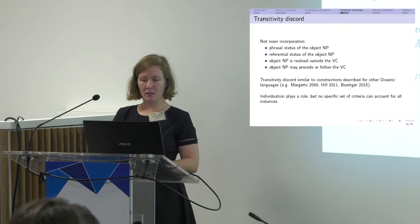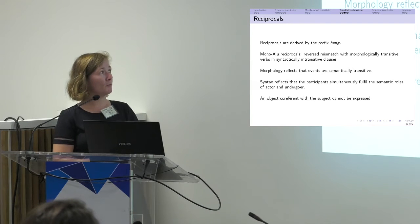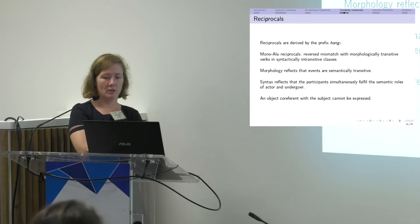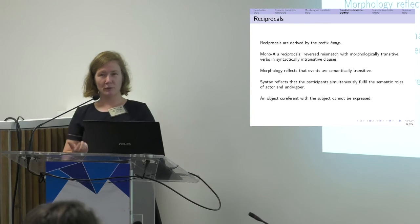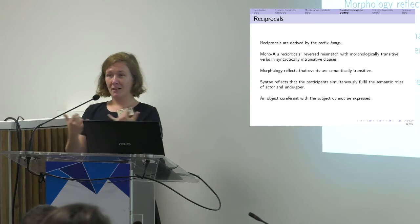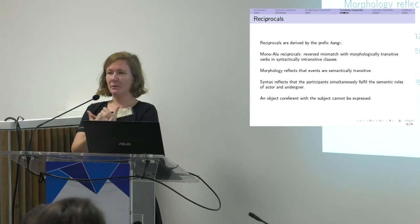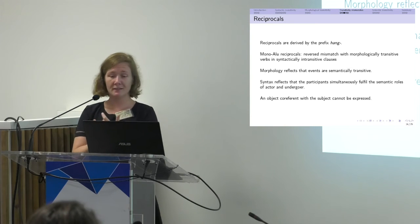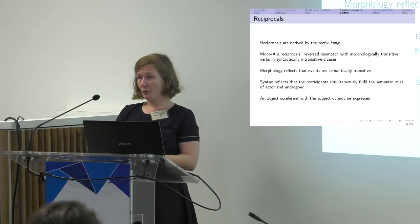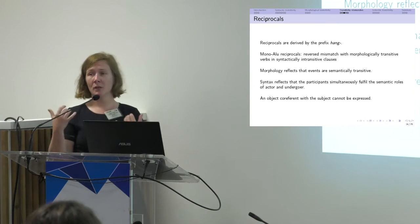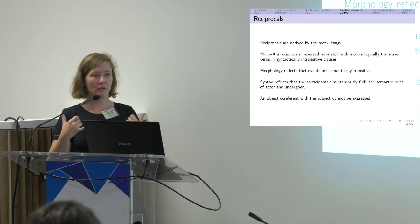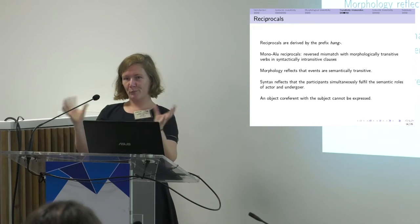When we look at Monoalu reciprocals, they're derived by the prefix hang. There we get a reversal of the mismatch where we have morphologically transitive verb forms and syntactically intransitive clauses. Prototypical reciprocal events are special because the set of subject reference and object reference are identical, and every participant fulfills more than one semantic role. Monoalu is sensitive to this, so the morphology reflects that the event is semantically transitive, but it has to occur in a syntactically intransitive clause, reflecting that each participant fulfills more than one semantic role — occurring as agent and patient or experiencer and stimulus simultaneously. In Monoalu, the object and subject cannot be co-referent.